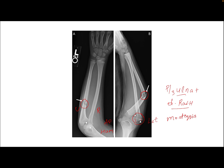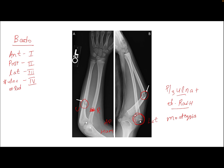Depending upon the direction in which the radial head dislocates, it is classified into four types — the Bado classification. If the head of the radius goes anteriorly, it is Type 1. If it goes posteriorly, it is Type 2. If it goes laterally, Type 3. And if along with the fracture of the proximal ulna there is also a fracture of the proximal radius, this combination comes into Type 4: fracture of the ulna plus fracture of the radius along with dislocation of the radial head. So this is the Monteggia fracture.